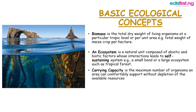The ecosystem is a natural unit composed of abiotic and biotic factors whose interactions lead to self-sustaining systems. An example is a small pond, or a large ecosystem such as the tropical forest. We also have carrying capacity, which is the maximum number of organisms an area can comfortably support without depletion of the available resources.